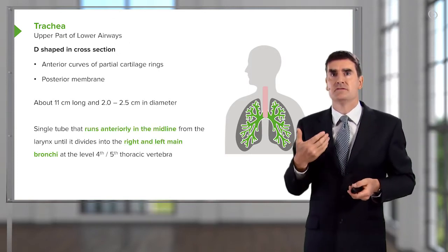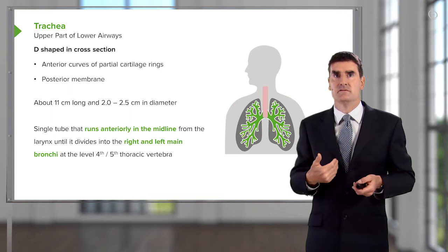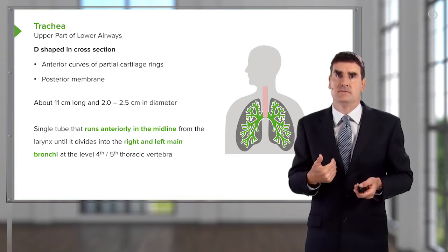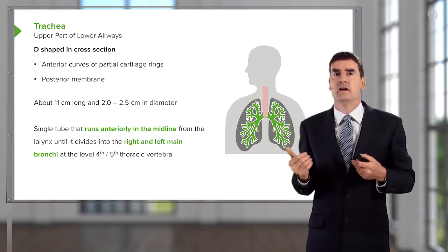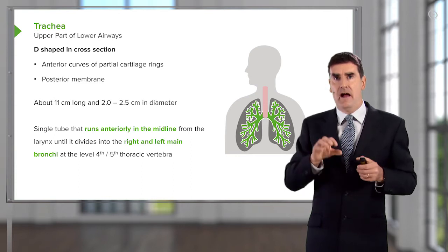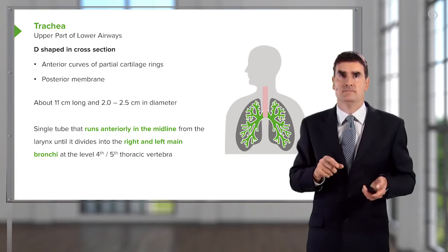It runs from the larynx right down to about the level of the 4th or 5th thoracic vertebrae, where it divides into the right and the left main bronchi. That division is called the carina.